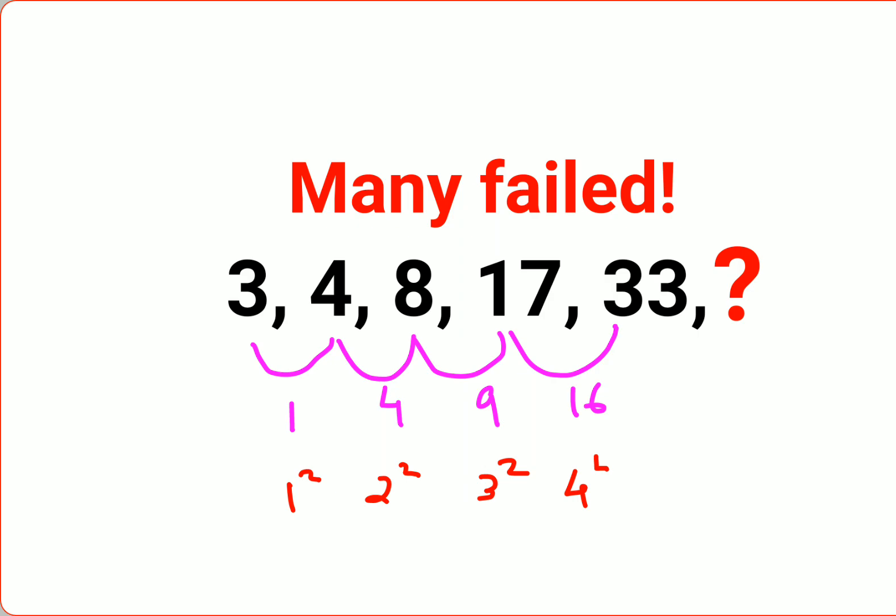The number which comes after 4 is 5, so 5 squared—that should be 25. So you should add 25 to 33, and the answer for this question comes out to be 58. I hope this is very, very clear to everyone.